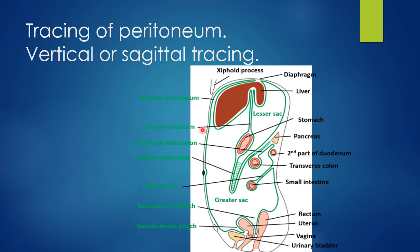In this diagram we can see the sagittal section of abdominal cavity in which we can see organs like liver, stomach, transverse colon, small intestine, some organs which are present retroperitoneally like pancreas, second part of duodenum, and some subperitoneal viscera like urinary bladder and uterus. When this peritoneum covers the wall of abdominal cavity from the inner side it is called parietal peritoneum, and when it reflects onto some organ it is called visceral peritoneum. When it reflects from liver towards stomach it forms a fold called lesser omentum.